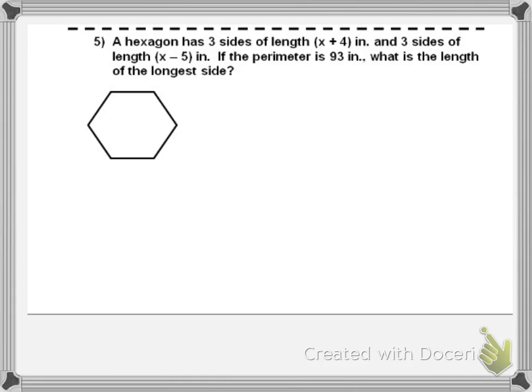So, all right. On this, I have a hexagon. And this is the last example. It's got three sides that are X plus 4. So, three of the sides are equal. And they're X plus 4. And then the other three sides are also equal. And they're X minus 5.